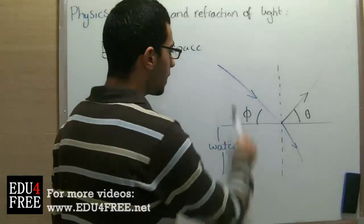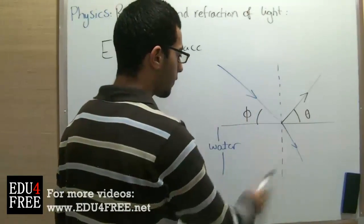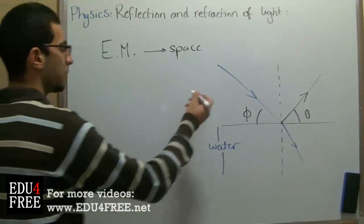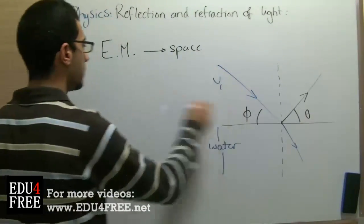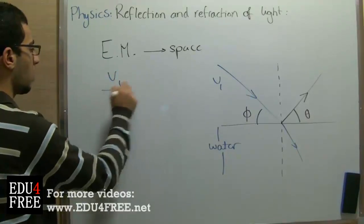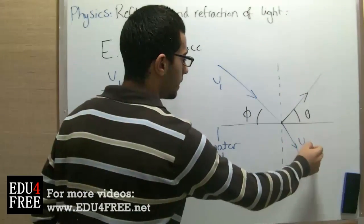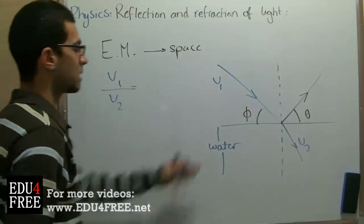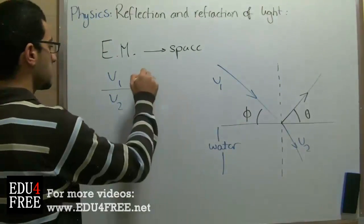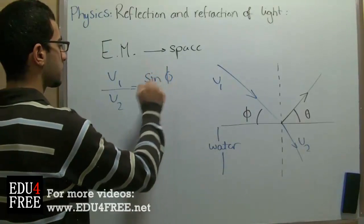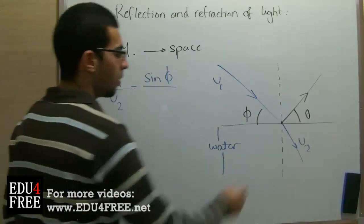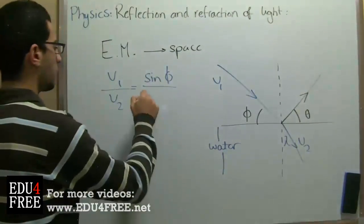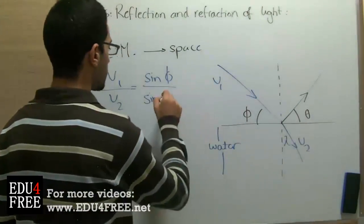Also, in light refraction, the ratio between the velocity of light in the first medium over the velocity of light in the second medium equals sine of the angle of incidence over sine of the angle of refraction.